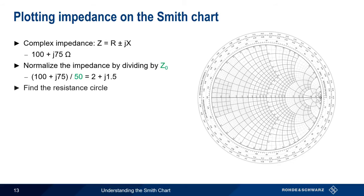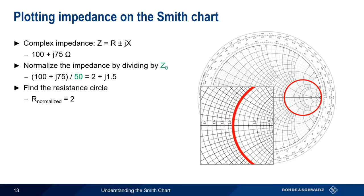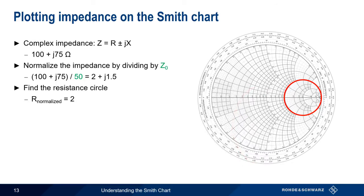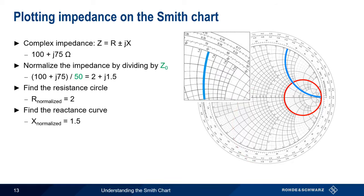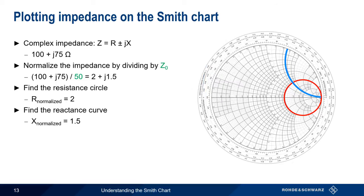We now find and plot the resistance circle for this normalized resistance. This is the circle that passes through the point 2.0 on the resistance axis. Then, we find and plot the reactance curve for our normalized reactance. This is the curve that touches the circular impedance axis at 1.5. We now can find our impedance at the intersection of these two lines.